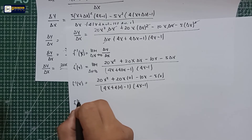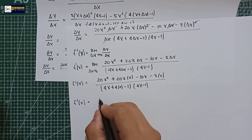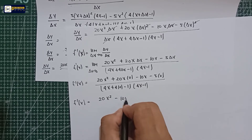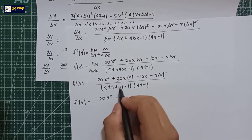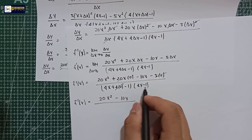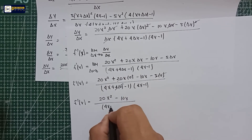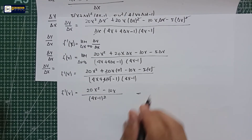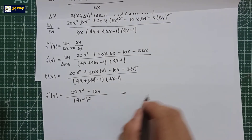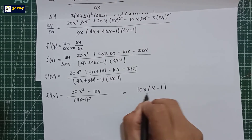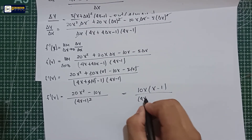Simplifying: f prime of x is equal to 20x squared minus 10x, since the terms with delta x become 0. The denominator is (4x minus 1) multiplied by (4x minus 1), which is (4x minus 1) raised to 2. Factoring out 10x from the numerator, the final answer is 10x(2x minus 1) all over (4x minus 1) squared.